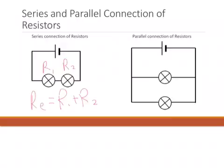If we look at the right, we see two resistors connected in parallel. Let us name the resistors as R3 and R4. For resistors connected in parallel, the effective resistance is given by the formula 1 over RE is equal to 1 over R3 plus 1 over R4.